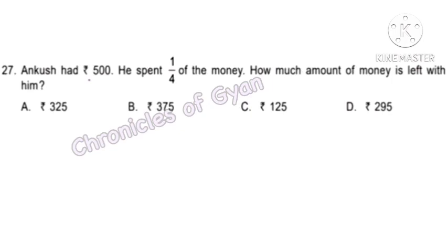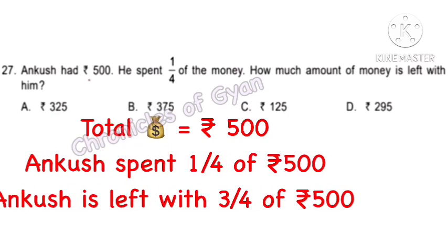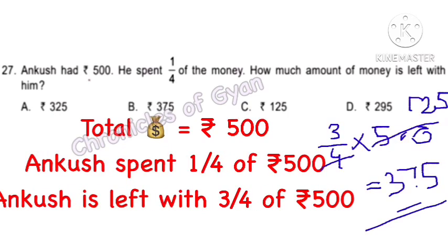Question 27. Ankush had Rs. 500 and spent 1/4 of the money. How much is left? He spent 1/4 of Rs. 500 and is left with 3/4 of Rs. 500, which is Rs. 375 — option B.